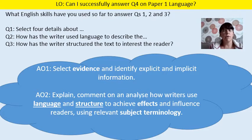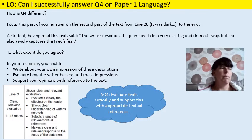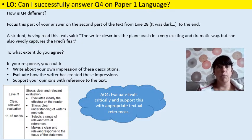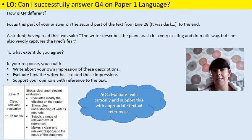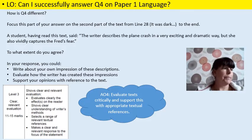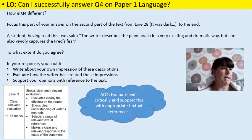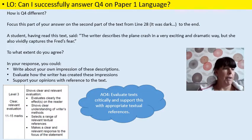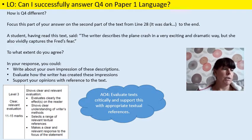You just have to understand what the question wants you to do and the best way to answer it. Question 4 is a long-winded question — I call it the 'Bob down the chip shop' question because it's framed around a quote that's completely made up by an examiner but pretends to be a student that's read it. For our purposes, I've created a question using the Explorer text. It says: focus this part of your answer on the second part of the text from line 28. A student, having read this text, said the writer describes the plane crash in a very exciting and dramatic way but she also vividly captures Fred's fear. To what extent do you agree? In your response, you could write about your impression of the drama of the plane crash and Fred's fear, evaluate how the writer has created these impressions and support your opinions with reference to the text.